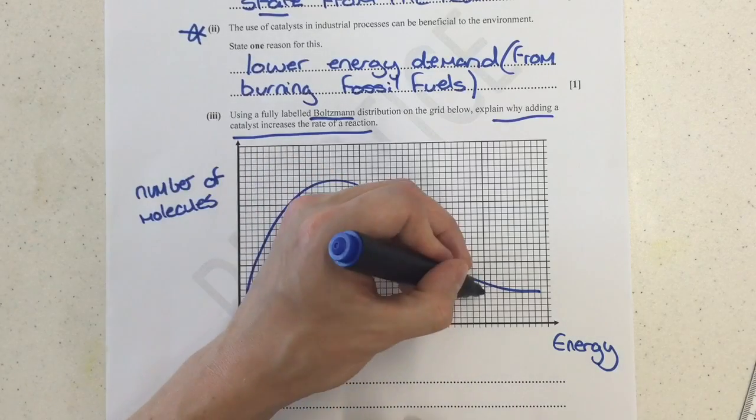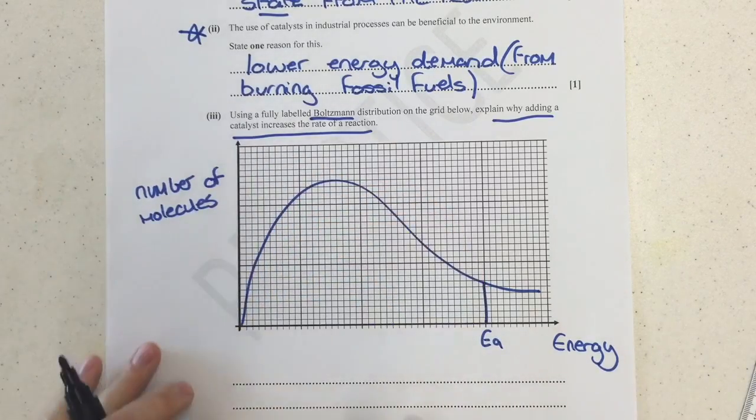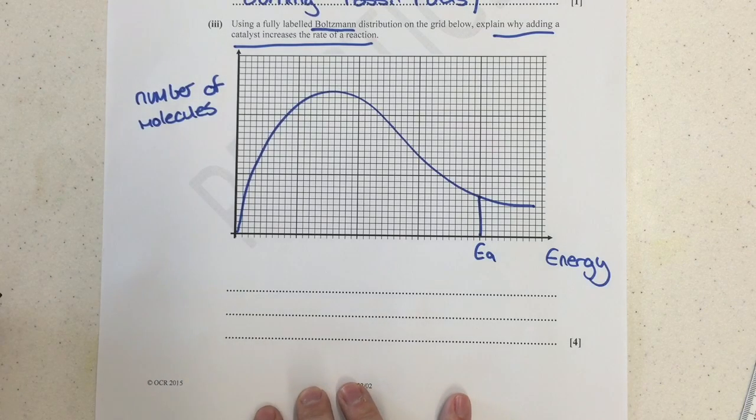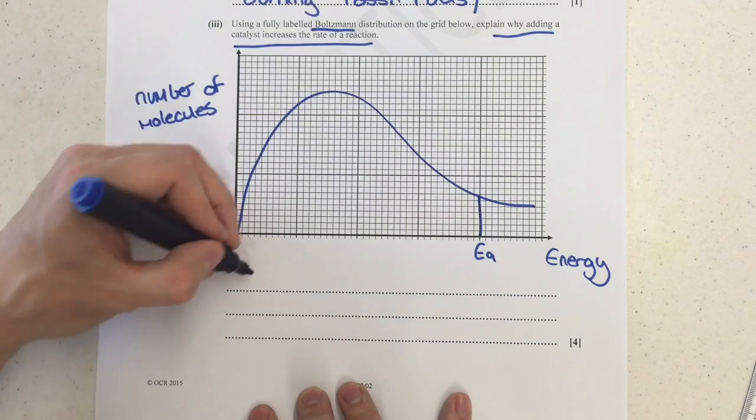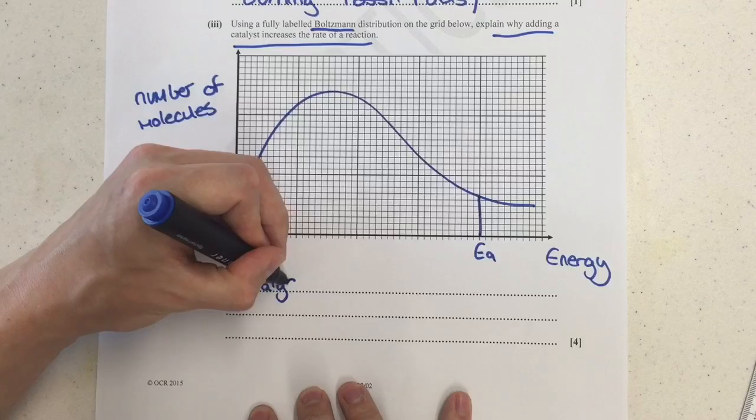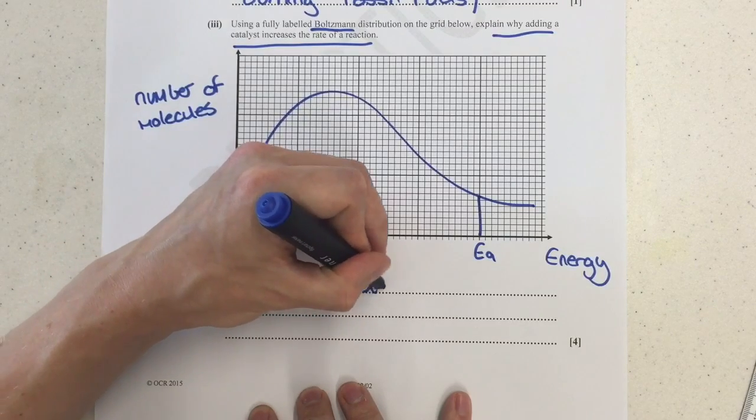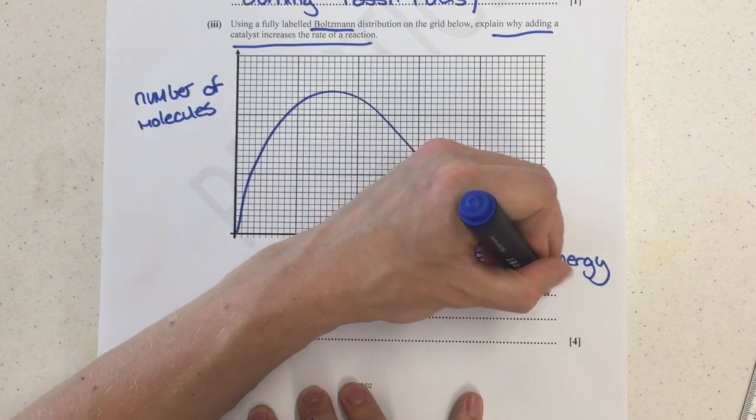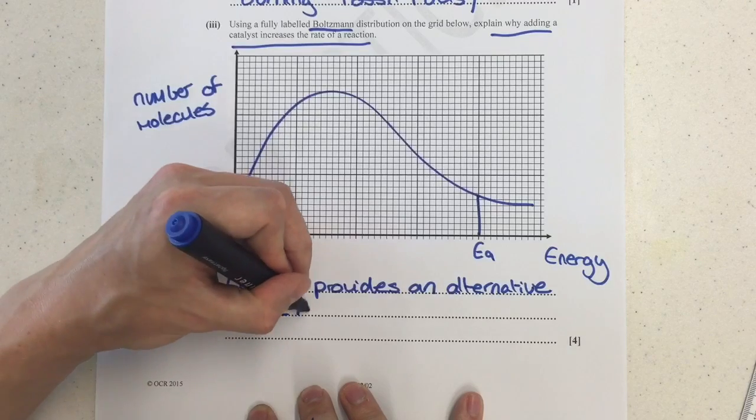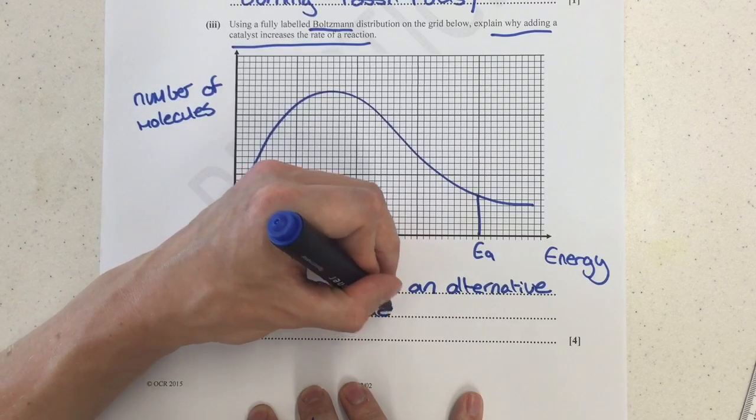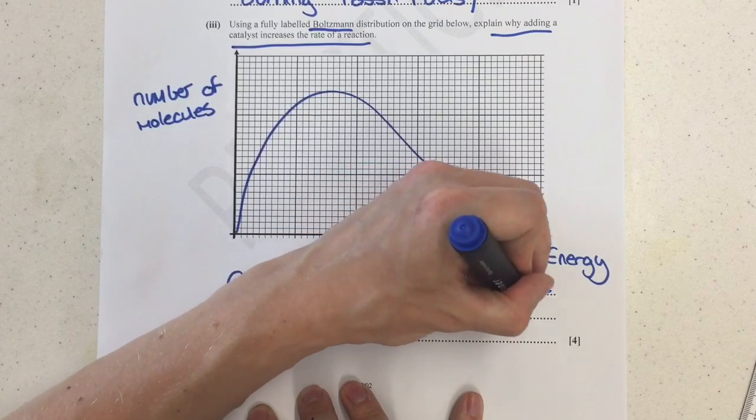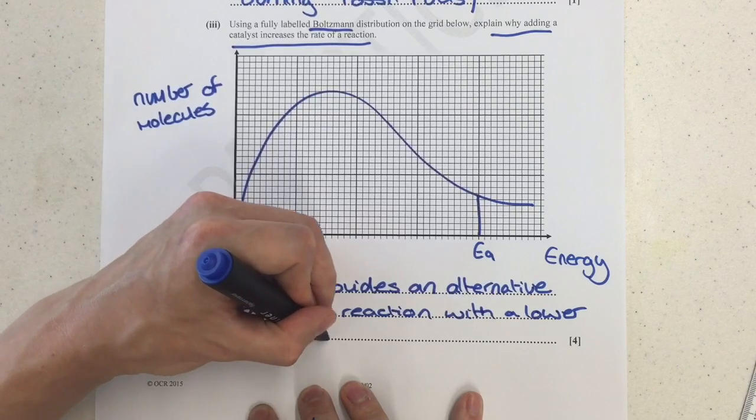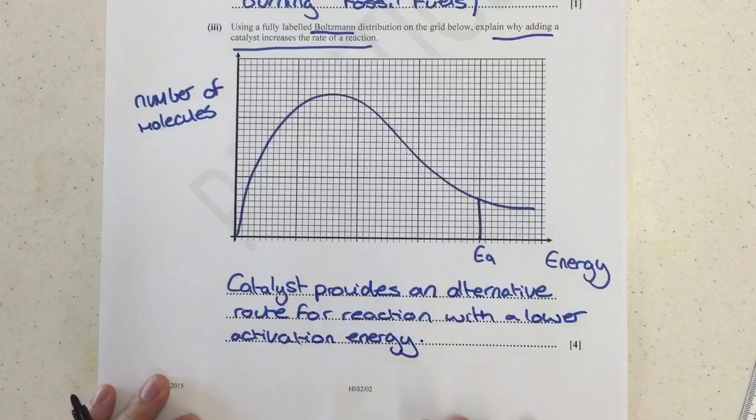You can label on the activation energy for this, but you don't really need to. But if we were going to, we would put it there. And that's going to help me explain my next bit. For the next bit, explain why adding a catalyst increases the rate of reaction. Don't just say a catalyst increases the rate of reaction, we already know that. What we need to say is a catalyst provides an alternative route for reaction with a lower activation energy.